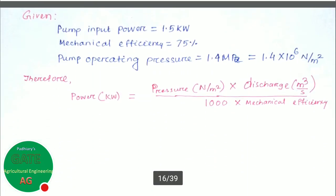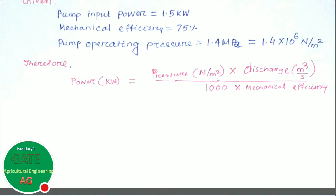As we know, power is equivalent to pressure times discharge. The pump output power depends on input power and mechanical efficiency, so mechanical efficiency comes to this side. Pressure is in N per meter square and discharge is in meter cube per second. Kilowatt is kilojoule per second — Newton times meter is joule — so meter square and meter cube cancel out, leaving Newton times meter per second, which is watt. The factor of 1000 accounts for kilowatt.